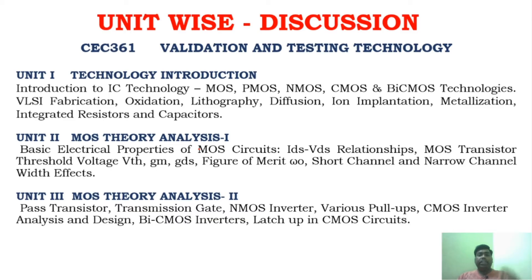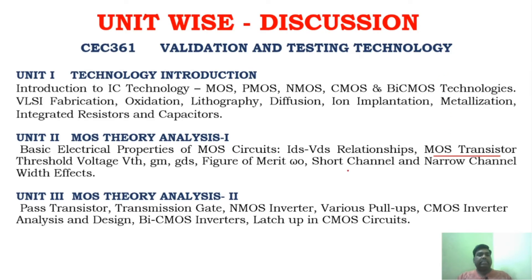Similarly, unit two — when you study unit two, understand VLSI. Whenever you come across CMOS technologies, you should be able to understand very clearly what CMOS technologies are all about. Once that concept is clear, you can understand the whole subject very easily. So in unit 2 you will study MOS transistors, relations, channel effect, MOS effect, and electrical properties. In unit 3 you will study CMOS inverters, CMOS circuits, and NMOS inverters — also a very simple unit. The subject has a maximum of 3 to 4 questions in all units.